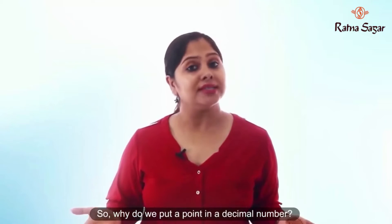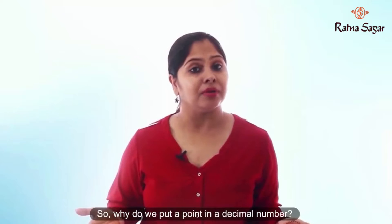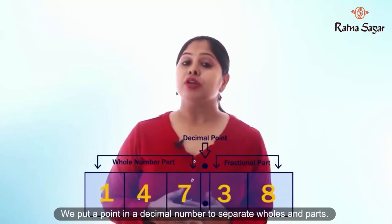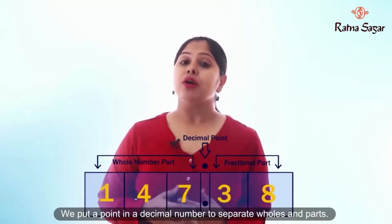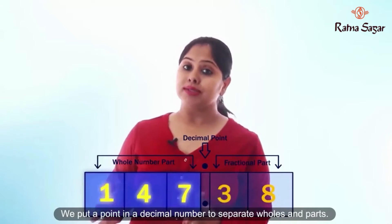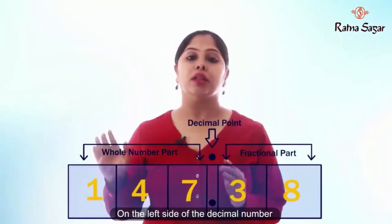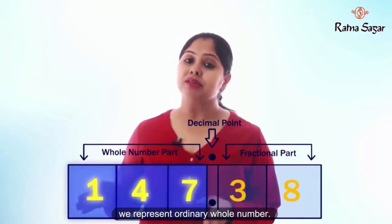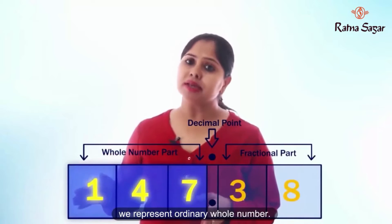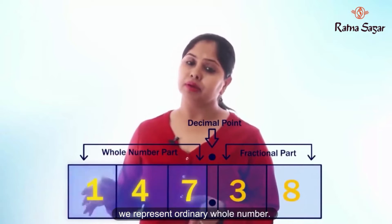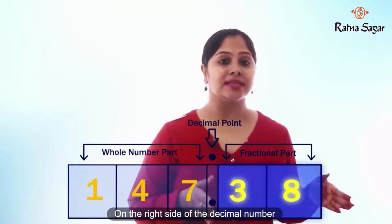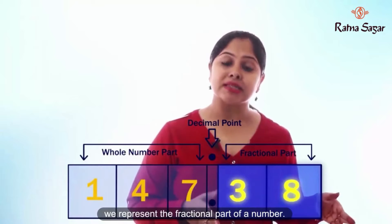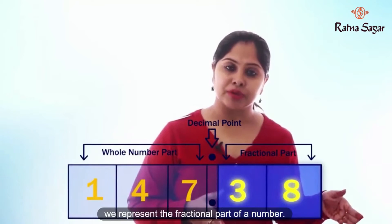So why do we put a point in a decimal number? We put a point in a decimal number to separate wholes and parts. On the left side of the decimal point we represent the ordinary whole number. On the right side of the decimal point we represent the fractional part of a number.